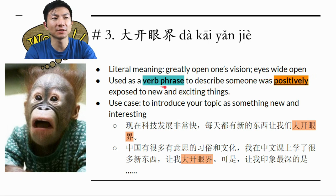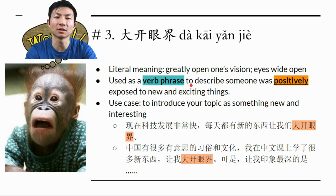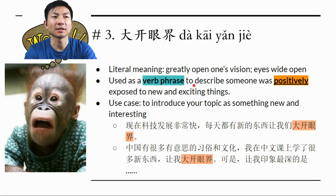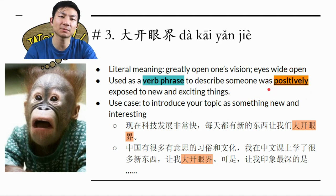大开眼界 is used as a verb phrase — 让我大开眼界. It's usually used in a kind of passive voice: 让我大开眼界. It's used to describe someone who was positively exposed to new and exciting things. Usually whatever 让你大开眼界 is something positive, new, and exciting.